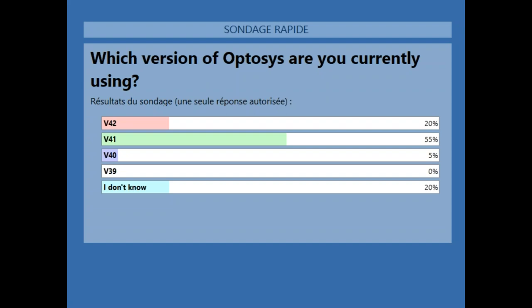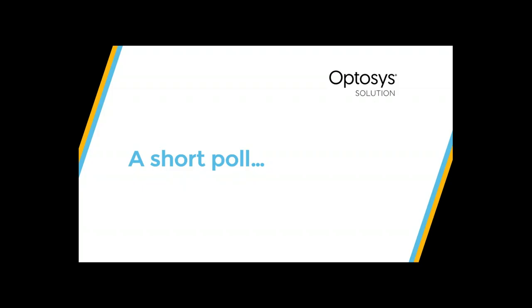Whatever version you're on, if you do the update it will always update to the latest version. There is a little pause right now on downloading Optasys version 42. It should be available again next week — there was a glitch with very old computers and we're fixing it. From Monday, you'll be able to download the new version of V42, and it will be compatible with Windows 7. However, we strongly suggest updating from Windows 7, Vista, or even XP to Windows 10, not only for Optasys sake but also for security, as those older Windows versions are no longer supported by Microsoft.